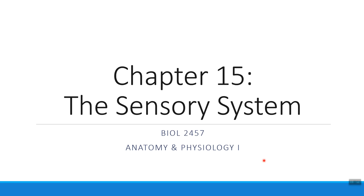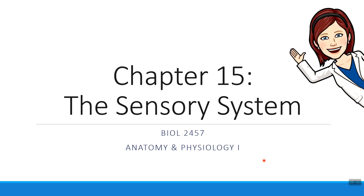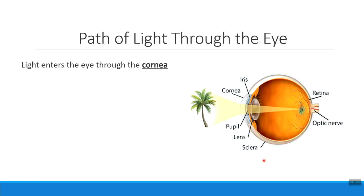Hi everybody, Dr. Aulis here. In this short video we're going to talk about the way that light travels through the eye, as well as the ways that we modify it and what can go wrong with some of those modifications. Let's start with a quick reminder of the way that light passes through the eye using some of those structures that we talked about in the previous video.